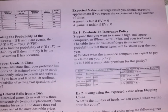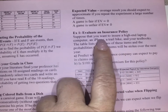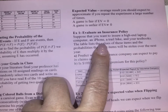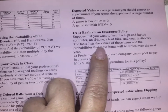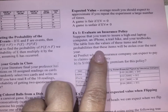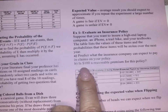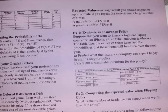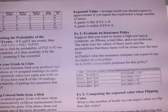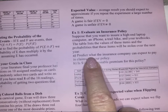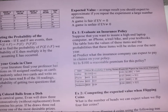For example one, we want to evaluate an insurance policy. Suppose you want to insure a high-end laptop computer, an iPhone, a trail bike, and your textbooks. The table lists the values of these items and the probabilities that the items will be stolen over the next year. We're going to predict what the insurance company can expect to pay in claims on your policy, and determine whether $100 is a reasonable premium.